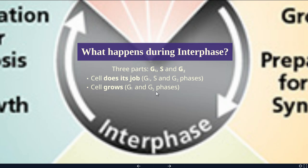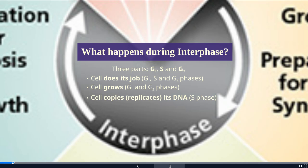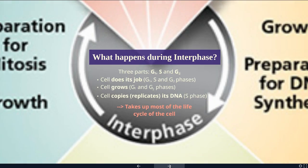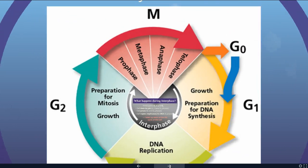During G1 and G2 phases, the cell is also going to go through growth — that's where we get the letter G: growth 1 and growth 2. During S phase, the cell is going to copy or replicate its DNA. It's called S phase because of DNA synthesis — this is when we're synthesizing additional DNA. Interphase takes up most of the life cycle of the cell because it's doing its job, and that's what we need cells to be doing most of the time.